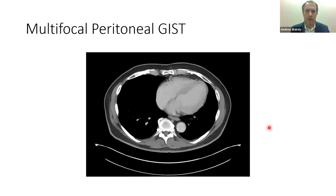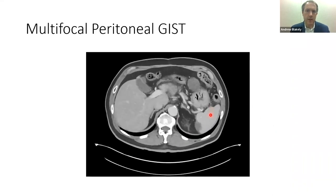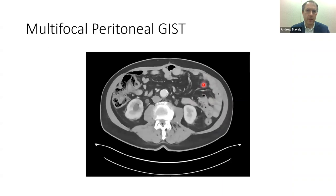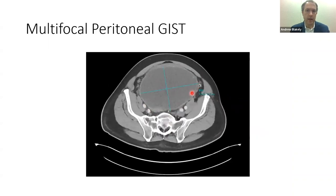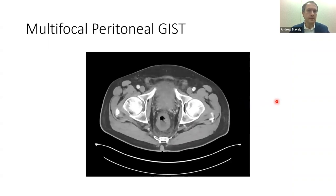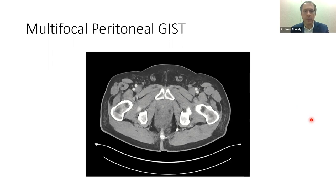Another patient had multifocal peritoneal GIST with tumors around the stomach, in the liver, around the spleen, and a very large GIST in the pelvis occupying essentially the entire pelvis. The patient's primary complaints were bladder obstruction, making it very difficult to urinate. Although there was extensive disease overall and he was in his mid-70s, our counseling was to focus on the area provoking the symptoms impairing his quality of life. We removed the GIST in the pelvis, and he did much better afterwards from a urinary perspective.